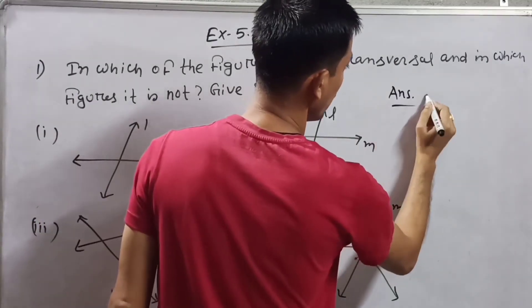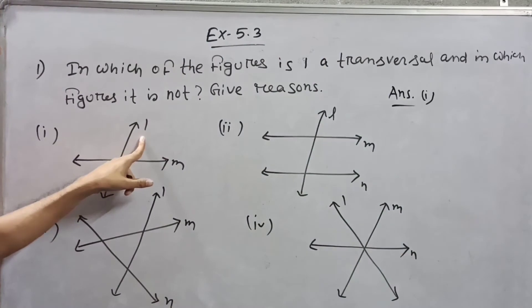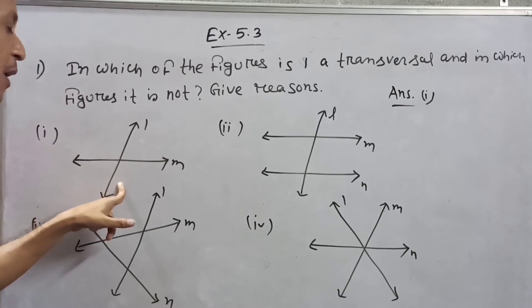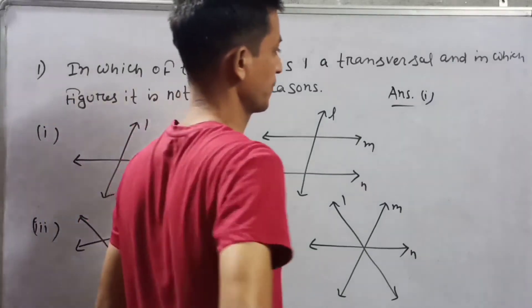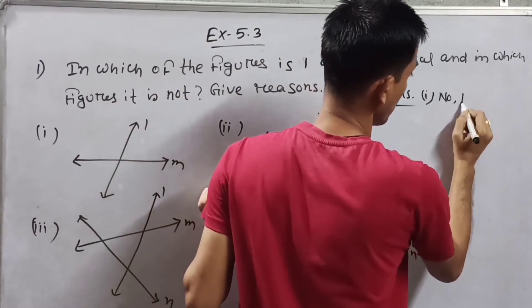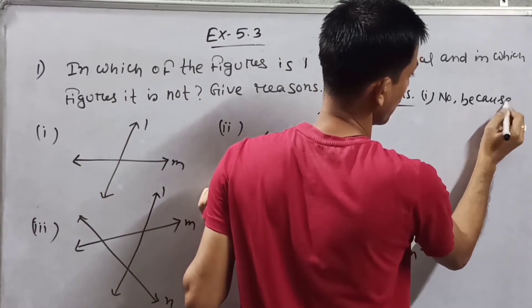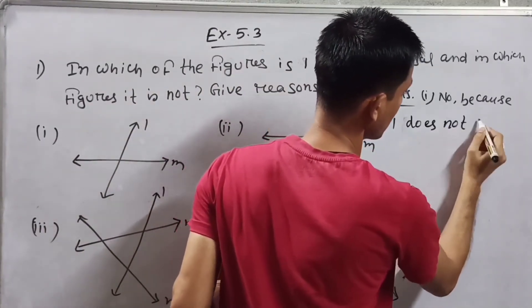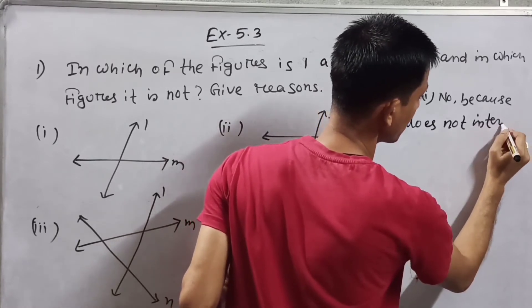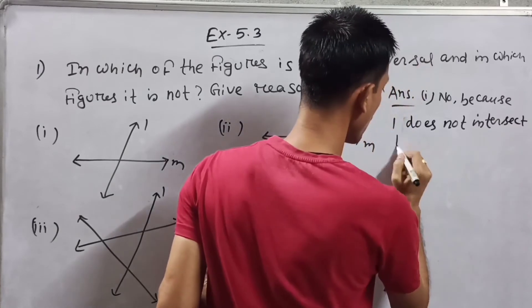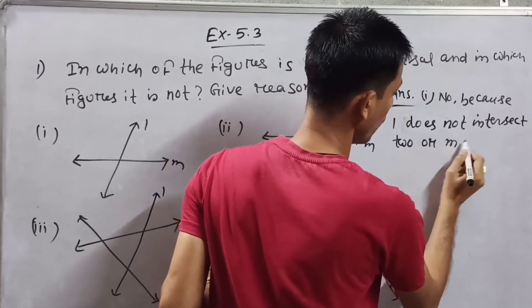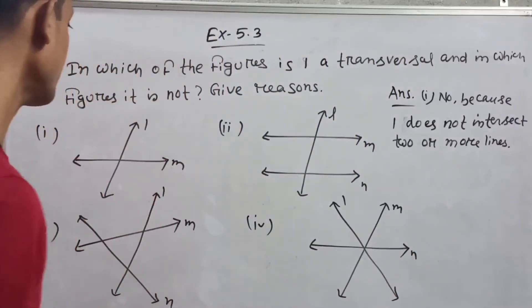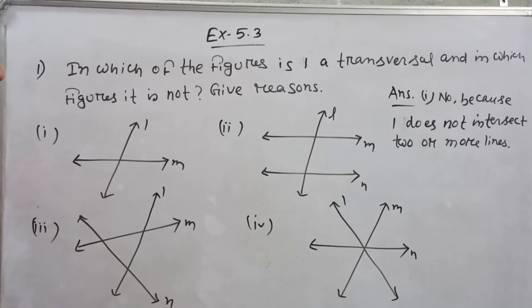Figure one: L is not a transversal. Because L does not intersect two or more lines.